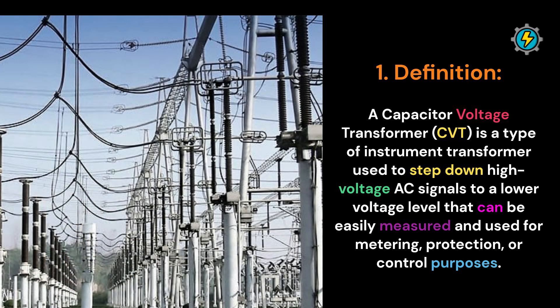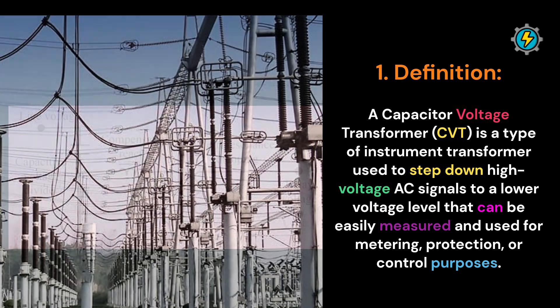Definition: A Capacitor Voltage Transformer (CVT) is a type of instrument transformer used to step down high-voltage AC signals to a lower voltage level that can be easily measured and used for metering, protection, or control purposes.